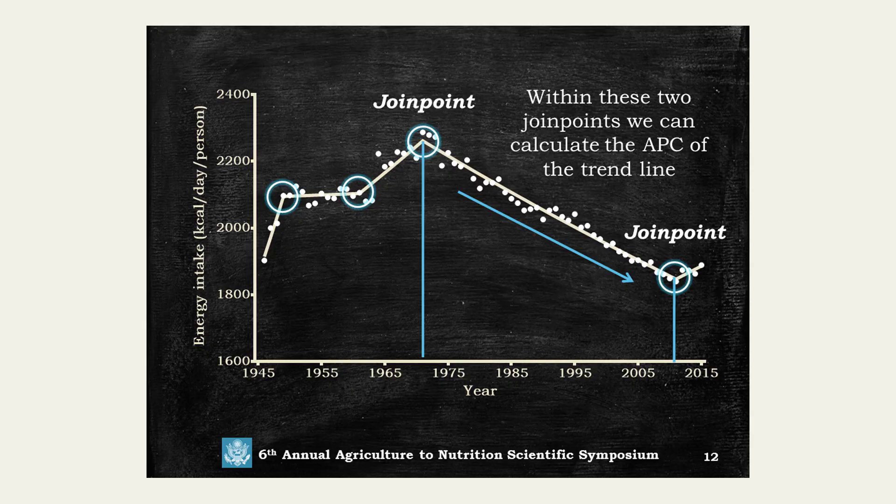In between two joint points, these are the years where the joint points are created — where there is a significant change in dietary intake. Between two joint points, we can calculate the APC, the annual percentage change, and how the change occurred. These constitute the methodology section.